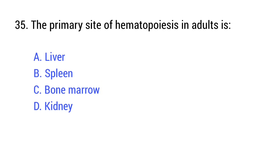Question number 35. The primary site of hematopoiesis in adults is — the right answer is option C: Bone marrow.